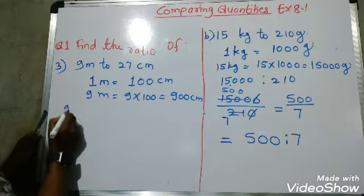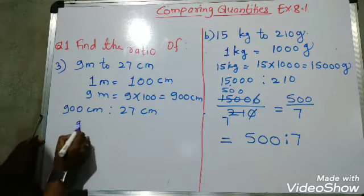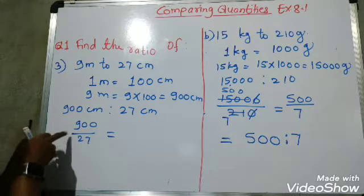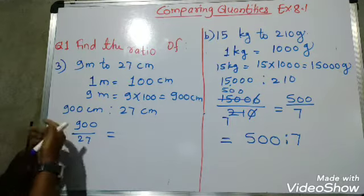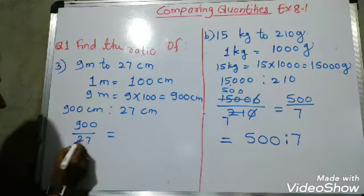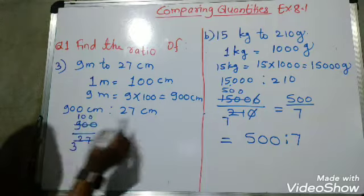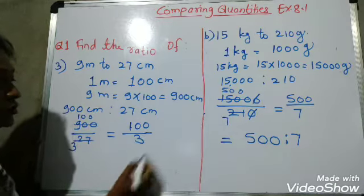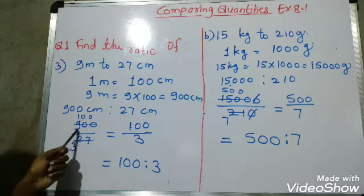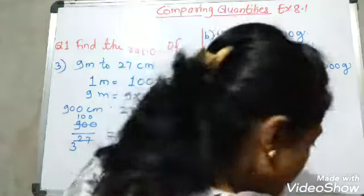Now find the ratio of 900 centimeter to 27 centimeter: write 900 upon 27. Both are divisible by nine — nine threes are 27, and nine ones are nine. So we get 100 upon 3, and our ratio is 100 is to 3.